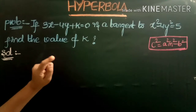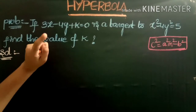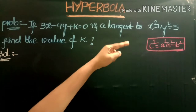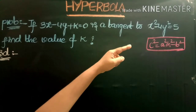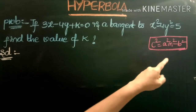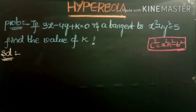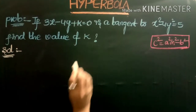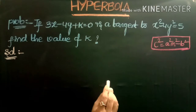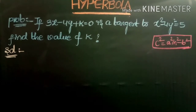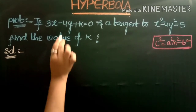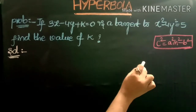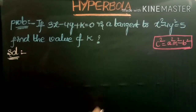We know that if the line y equals mx plus c is a tangent to the hyperbola x squared by a squared minus y squared by b squared equals 1, then the condition is c squared equals a squared m squared minus b squared. First we convert the given hyperbola into standard form, then convert the given line into the form y equals mx plus c, and apply the tangency condition to get the value of k.